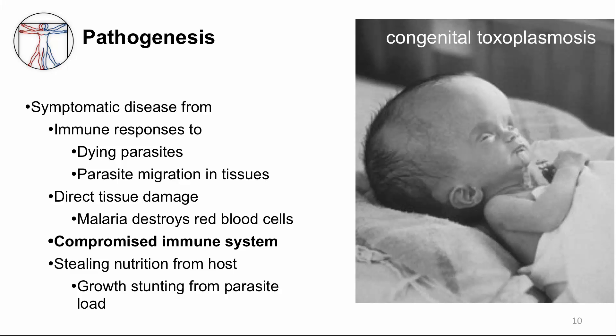Toxoplasma gondii is a protozoan parasite which can infect people if they ingest oocysts within feces of infected cats. Usually these parasites will establish themselves in our tissues without causing any disease. But in pregnancy, which is an immune-compromised state, devastating consequences can occur. The picture here is a baby affected by congenital toxoplasmosis. It caused hydrocephalus, which is why his head is so large — his skull is filled with a lot of fluid and not much brain tissue. Toxoplasma gondii can also reactivate in other immune-compromised patients, causing disease in the lungs, eyes, and other organs.